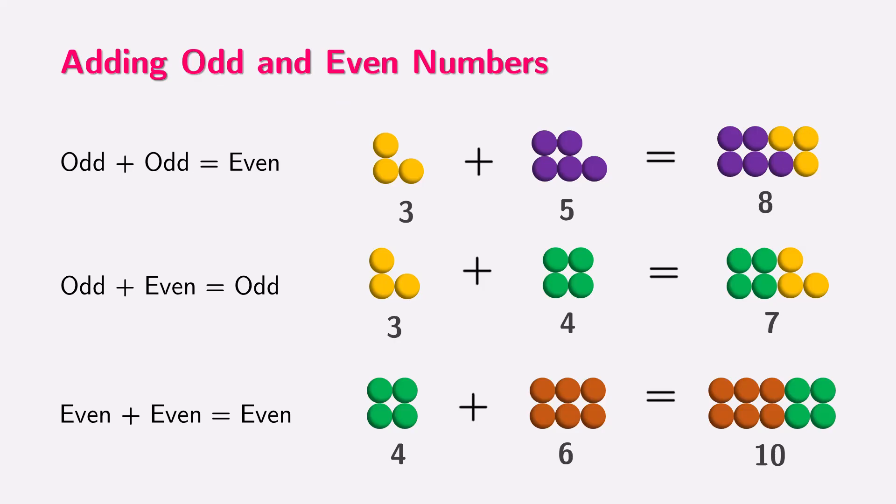It's because an odd number always has one leftover dot, and when we add two odd numbers, these two leftover dots combine to make another pair, resulting in an even total.